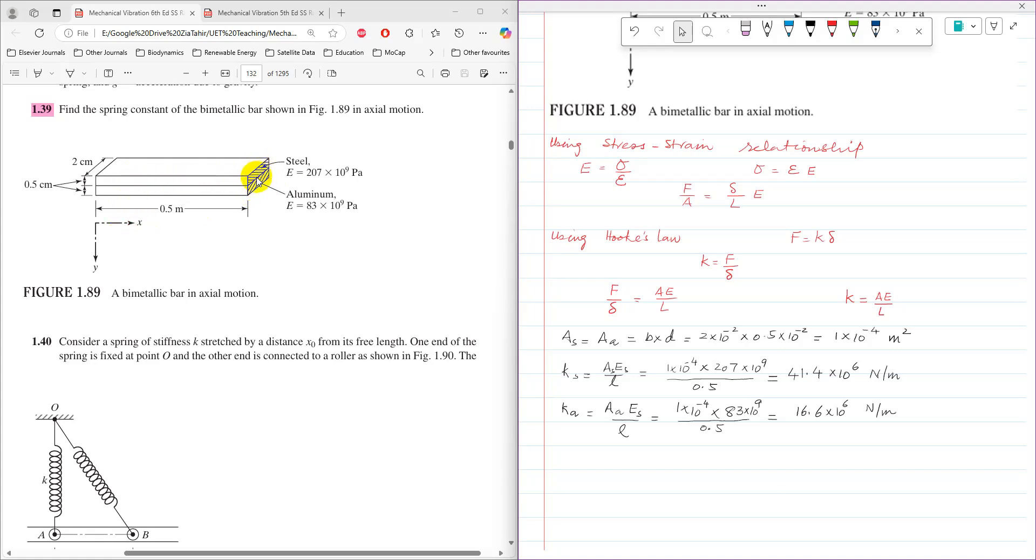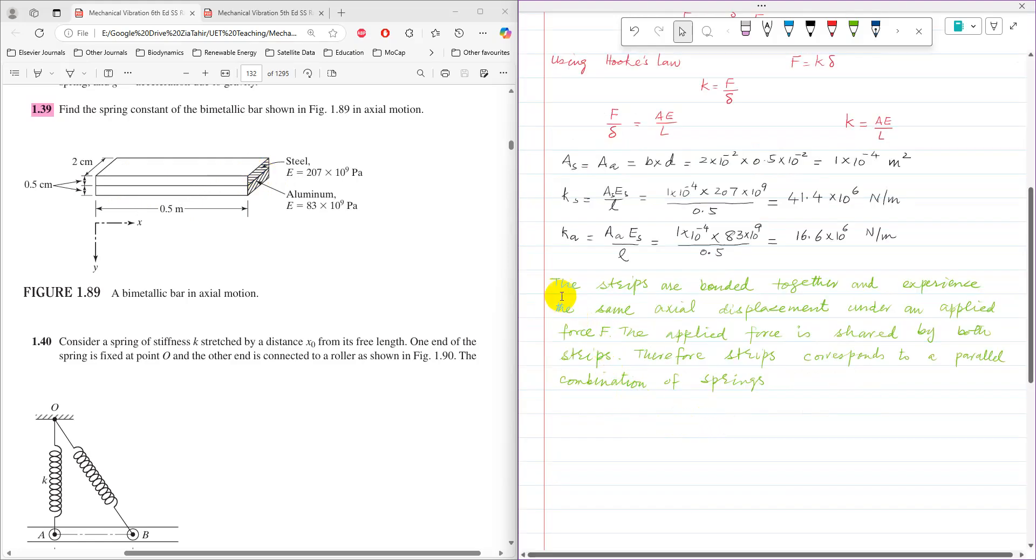Since the strips are bonded together and experience the same axial displacement under applied force F, and the force is shared by both strips, this represents a parallel combination of springs.